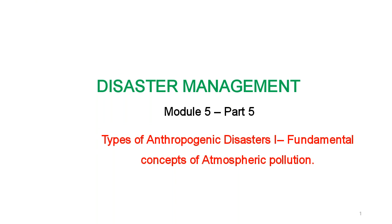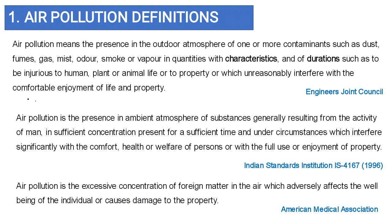Let us continue with our discussion on module 5 part 2 about atmospheric pollution and air pollution. Various definitions are provided by various agencies. The Engineers Joint Council defines air pollution as the presence in the outdoor atmosphere of one or more contaminants such as dust, fumes, gas, mist, odor, smoke, or vapor in quantity, characteristics, and duration such as to be injurious to human, plant, or animal life, or to property, or which unreasonably interfere with the comfortable enjoyment of life and property.